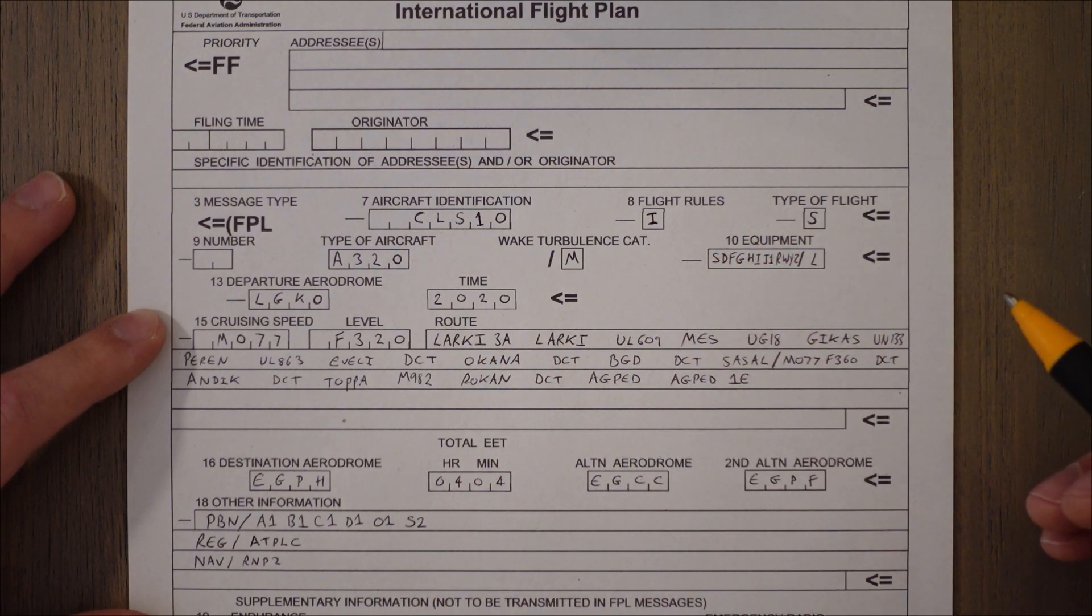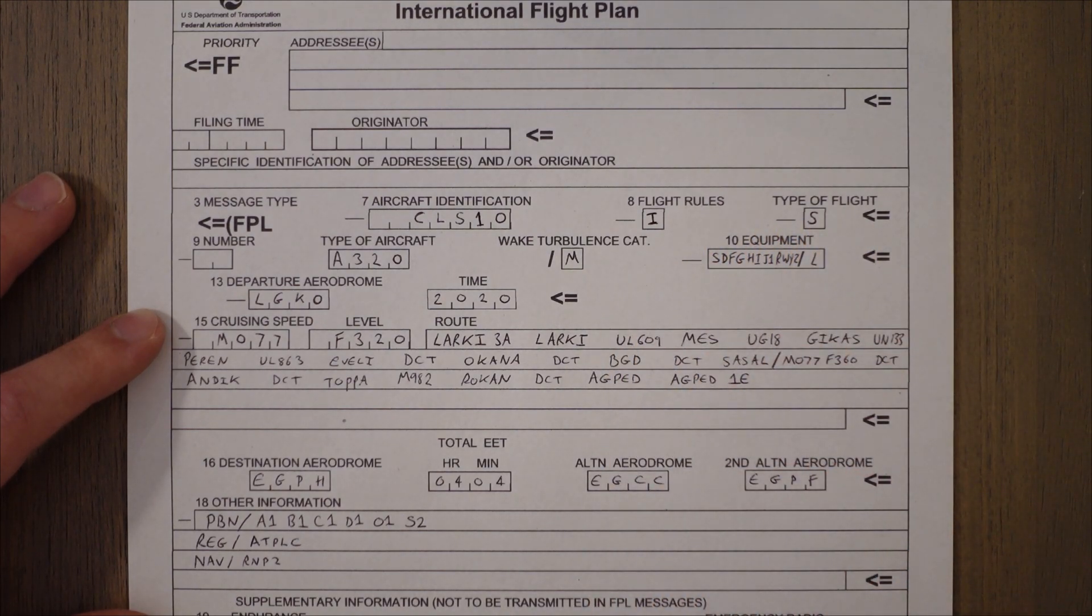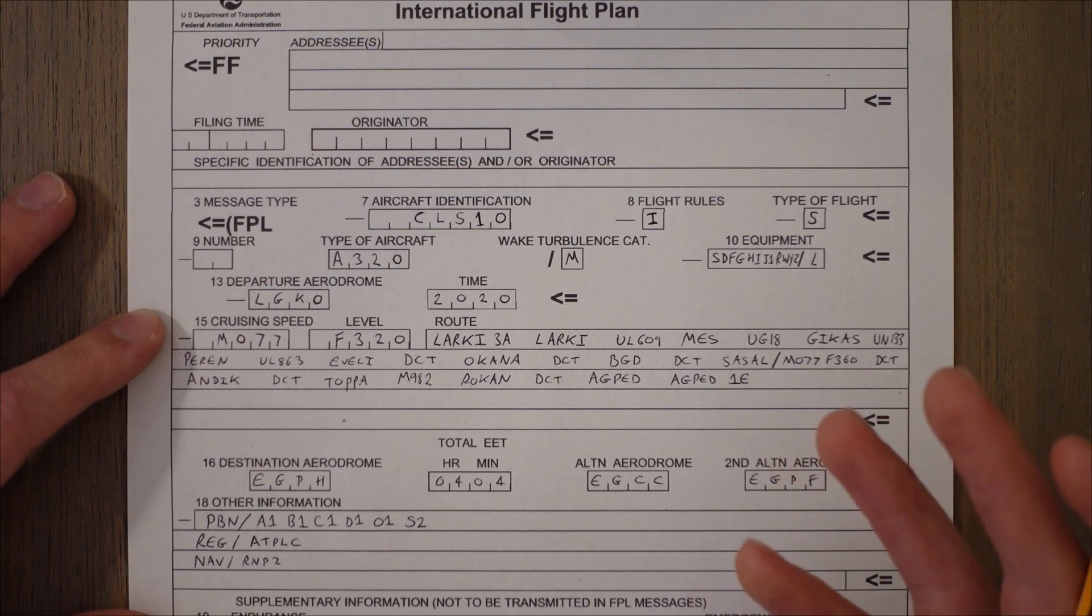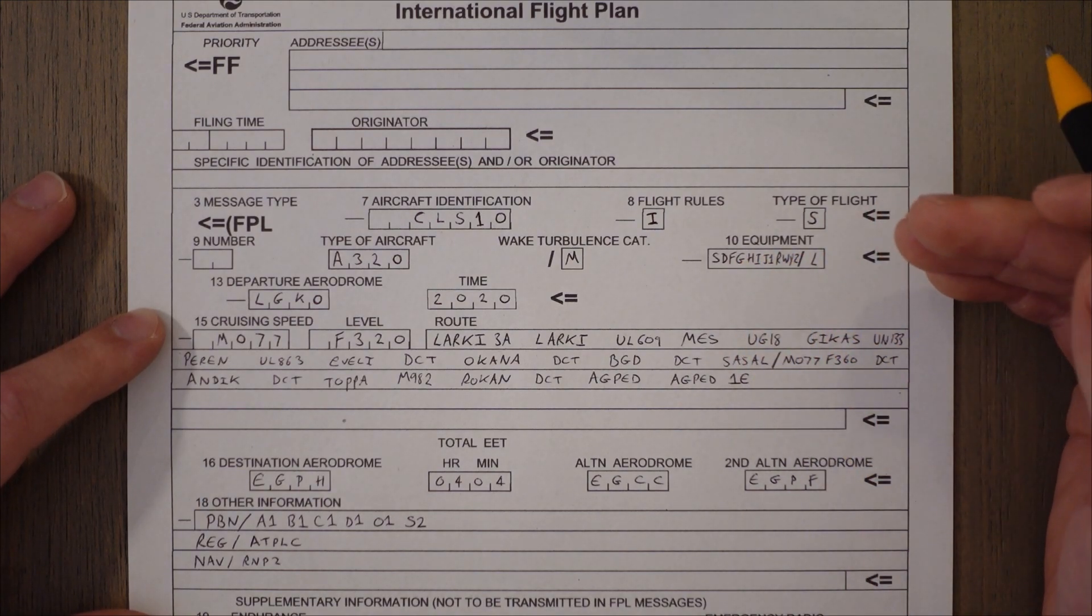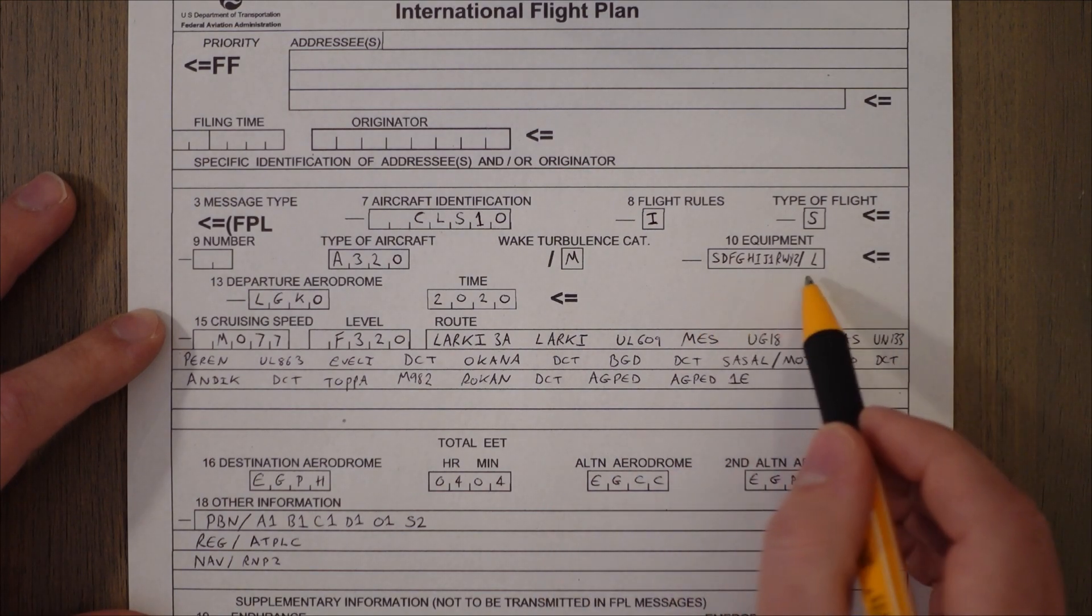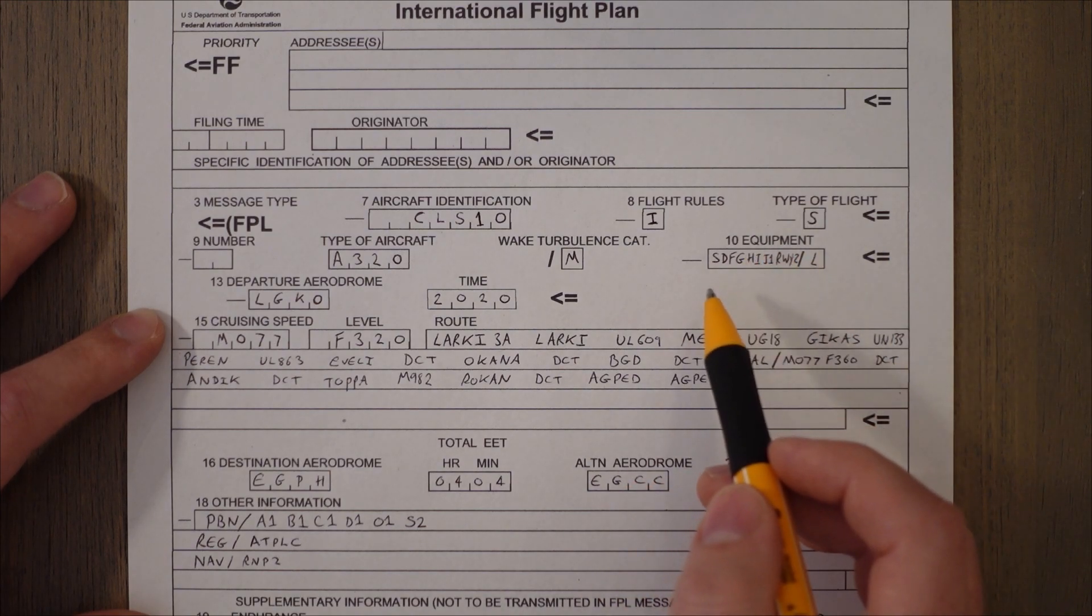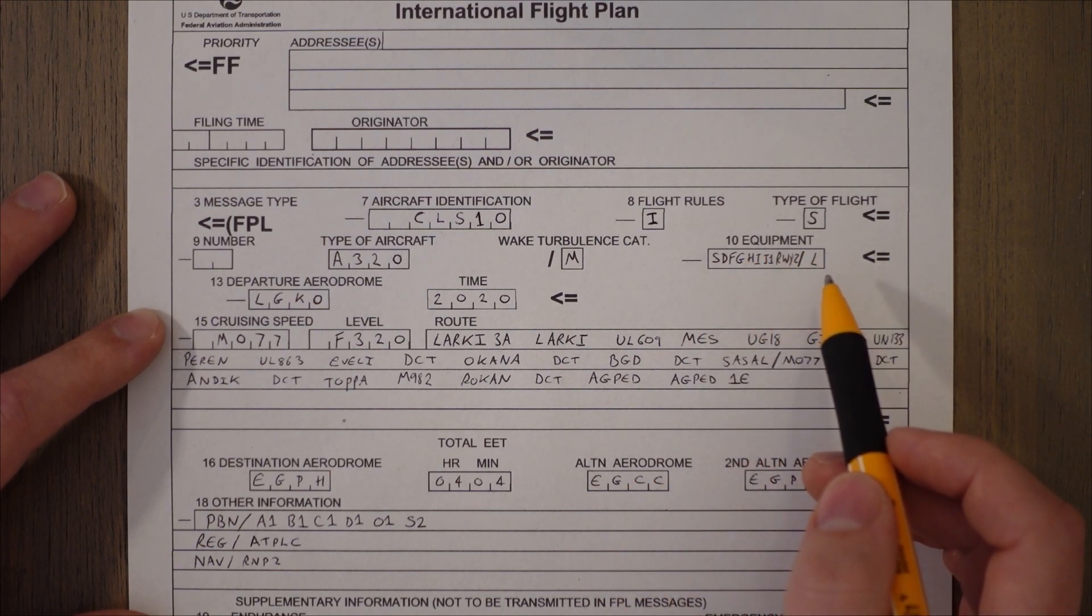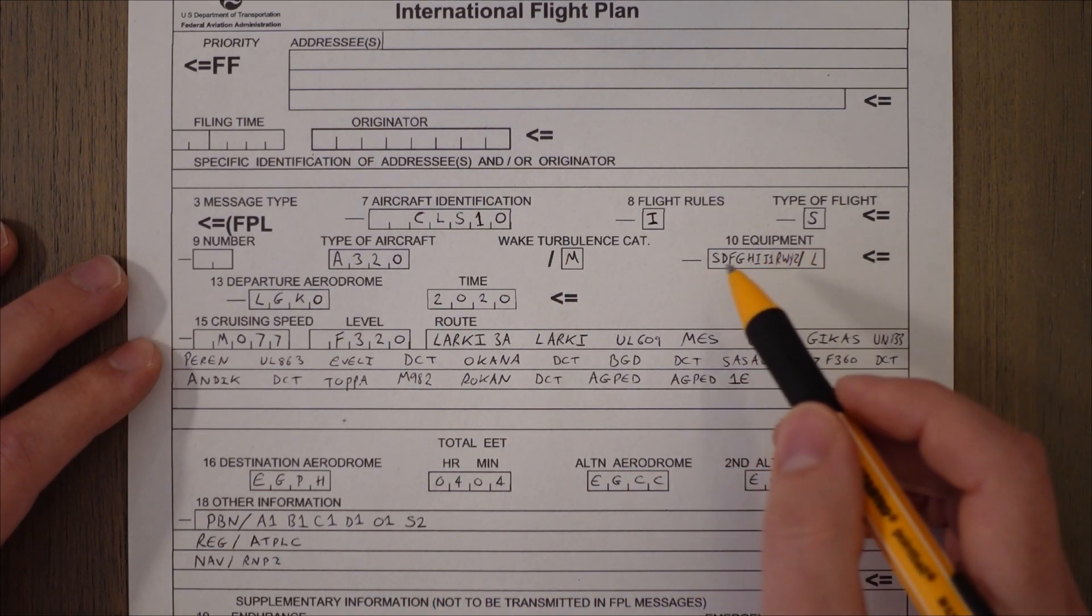10 is the equipment that we have on board the aircraft in terms of navigation, communication, and capabilities. So this section here contains a lot of codes. It's very extensive, it covers a lot. So again look online. I'm just going to talk about the letters I've put down here and but this is not the full list that can go on an aircraft. There's a hell of a lot more letters that can go in.